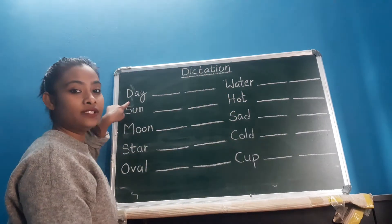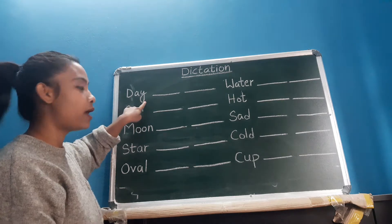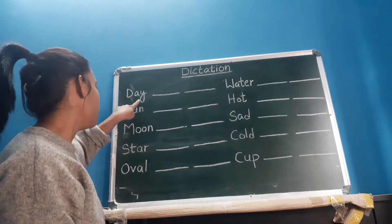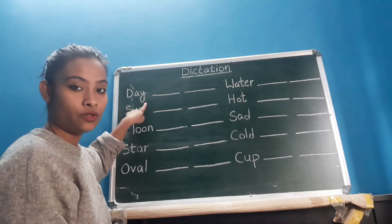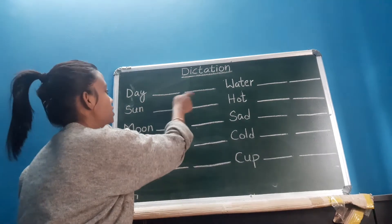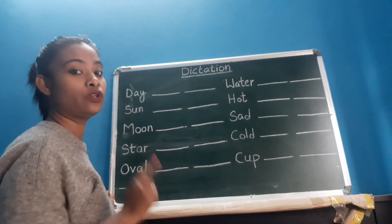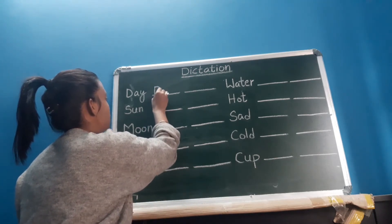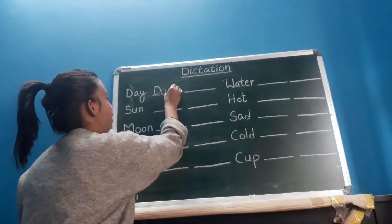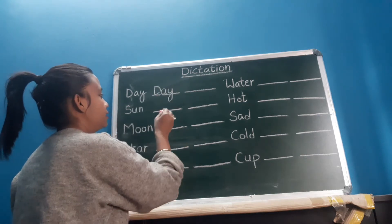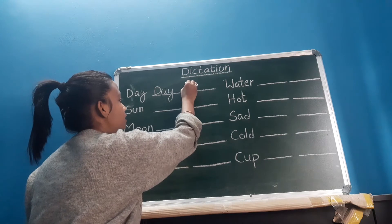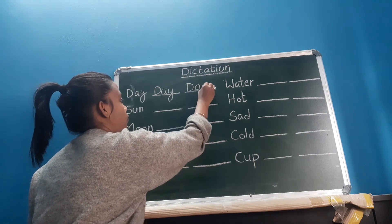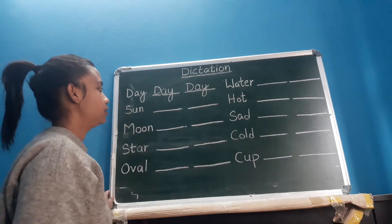First one is 'day.' D, A, Y — day. Again, D, A, Y — day. As you can see here, there are two blank spaces; you have to write over there. D, A, Y — day. Again, D, A, Y — day. All right, children?